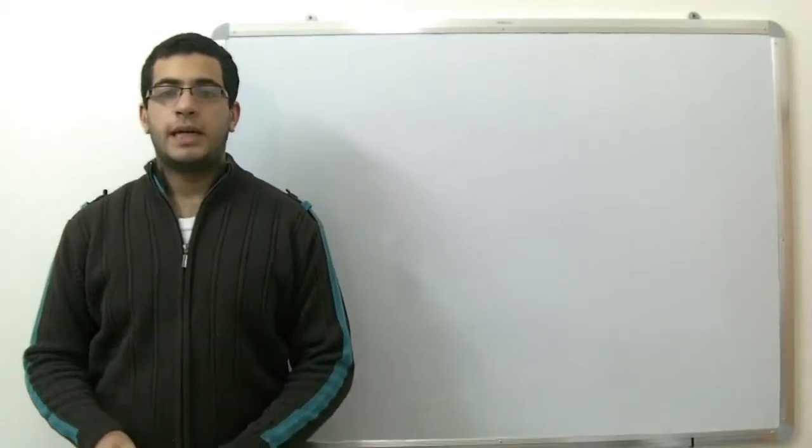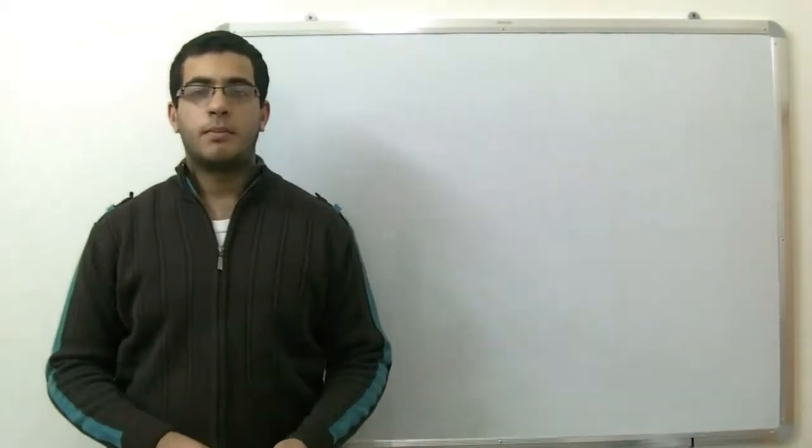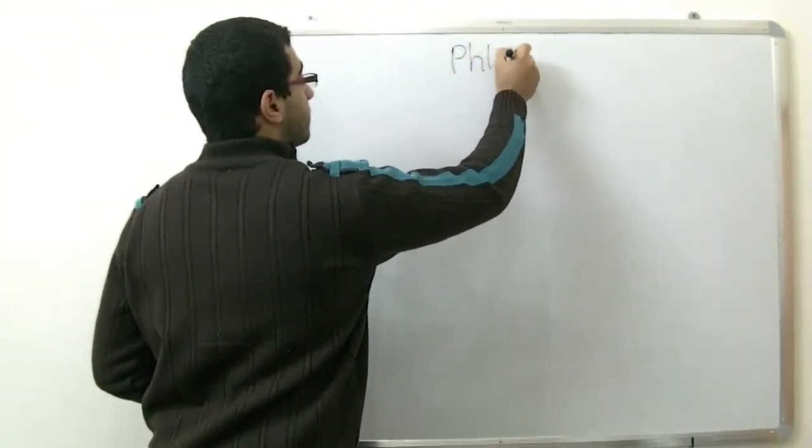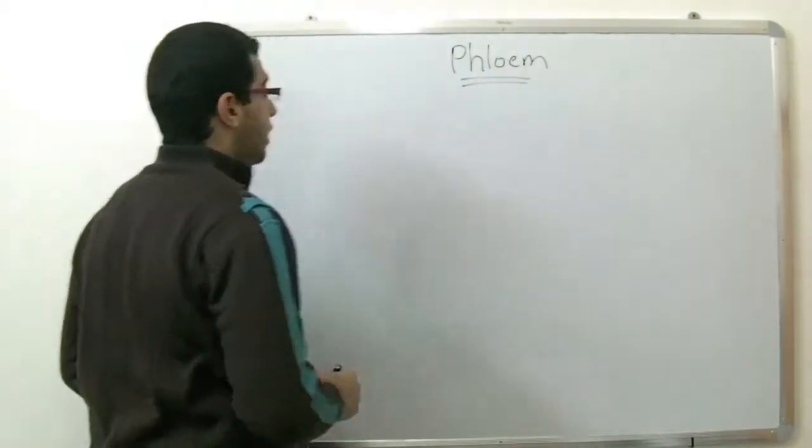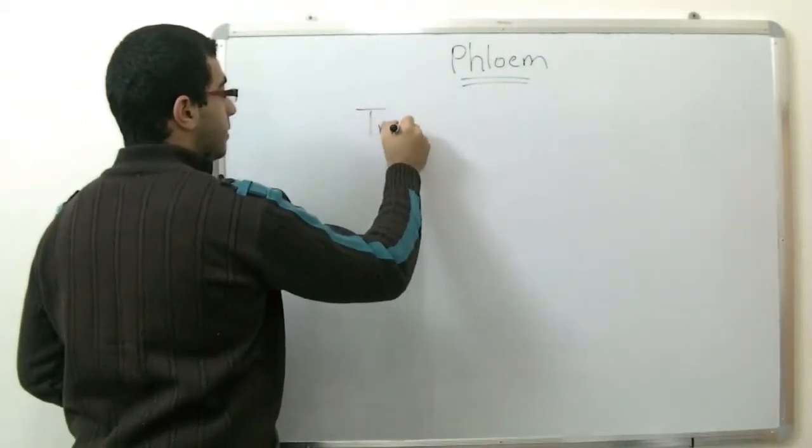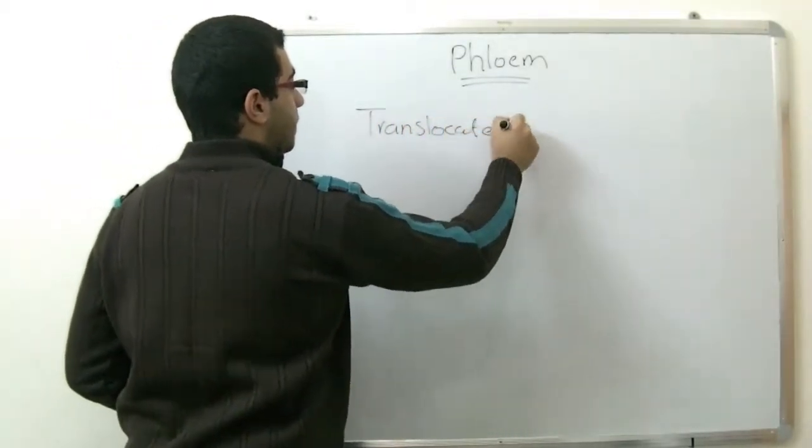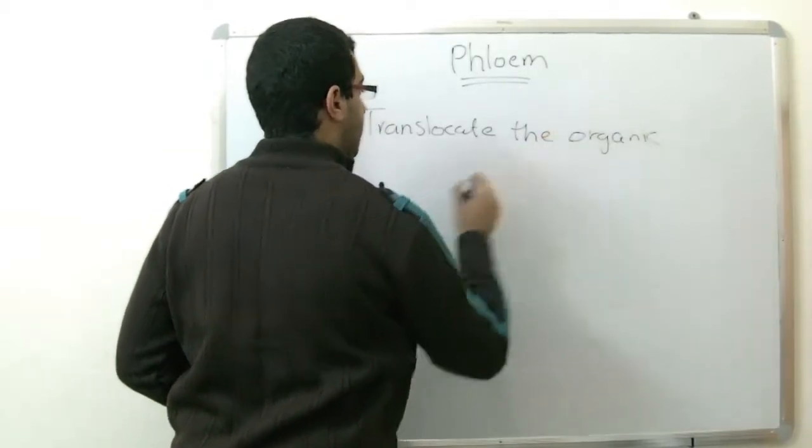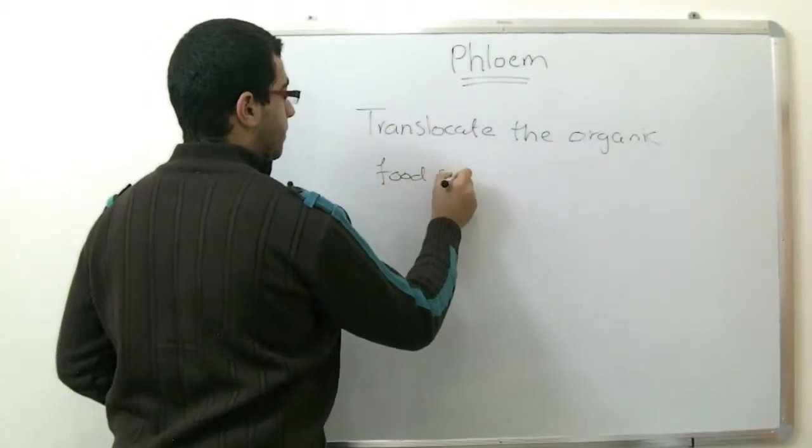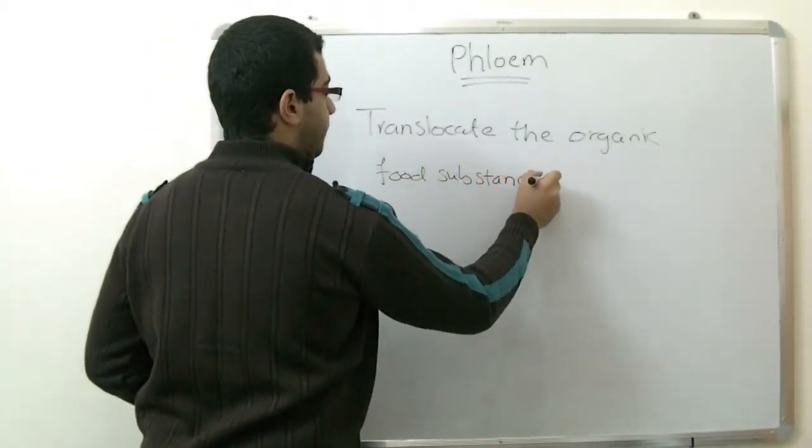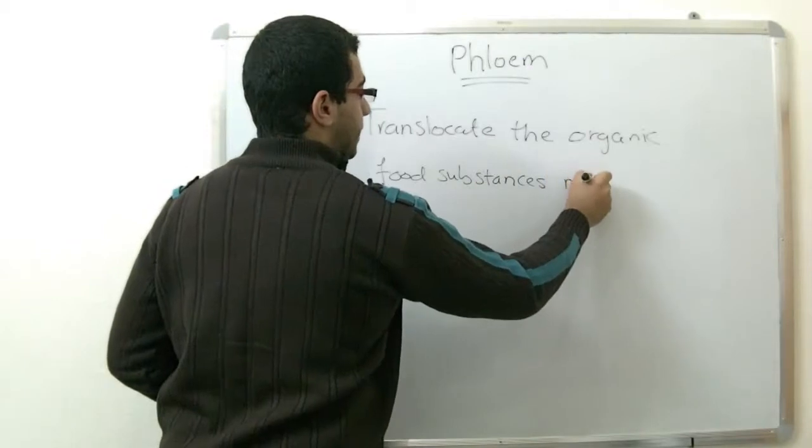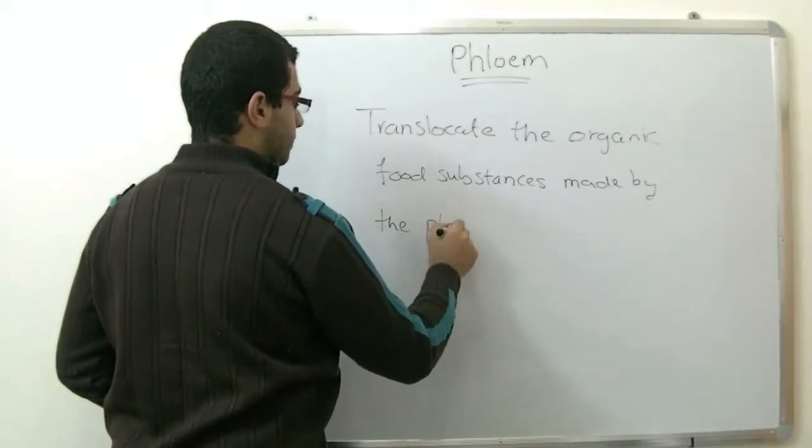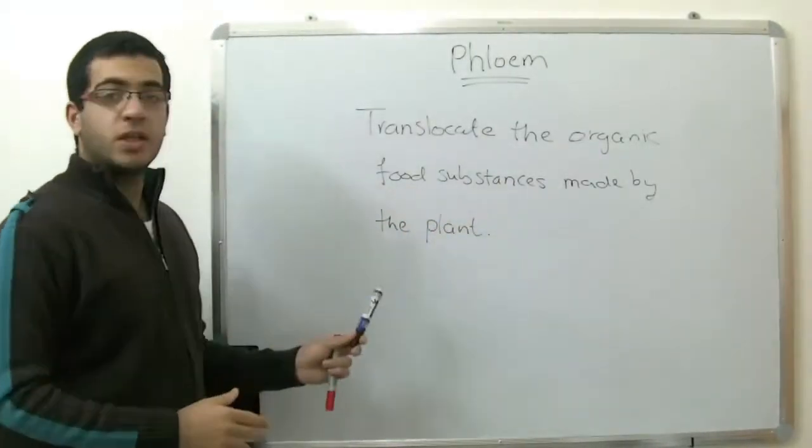Today we will talk about the phloem tissue, as last time we talked about xylem vessels. The phloem tissues, as we said before, are used to translocate the organic food substances made by the plant. This is the function of the phloem tissue.